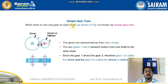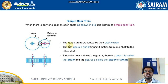Starting with simple gear trains: here we can see that there is only one gear on each shaft, and this kind of setup is called a simple gear train. We have a driver and a driven or follower, each mounted on a single shaft. These gears are represented by their pitch circles, and gear one and gear two transmit motion from one shaft to another. Since gear one drives gear two, gear one is called the driver and gear two is called the driven or follower.